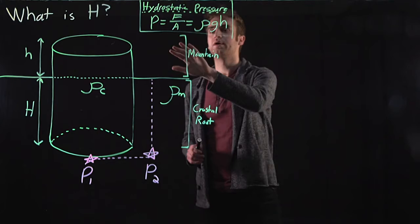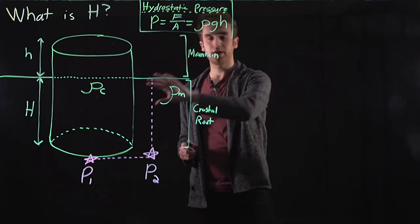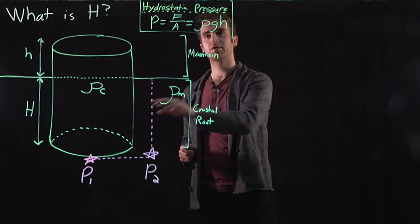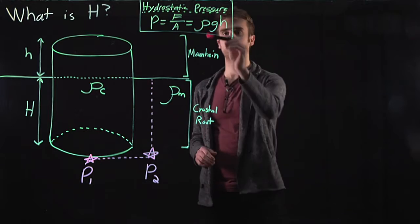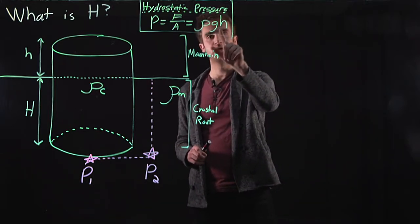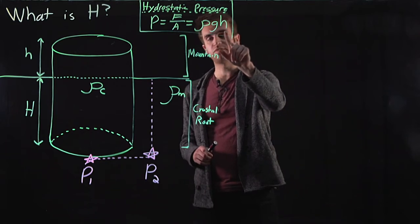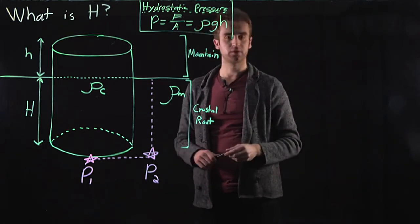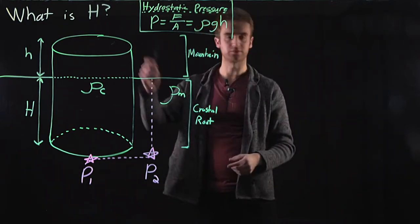So the pressure induced by the weight of overlying material is described as rho g h, or the density times the gravitational acceleration times the depth under the material, and that goes all the way up to the surface.